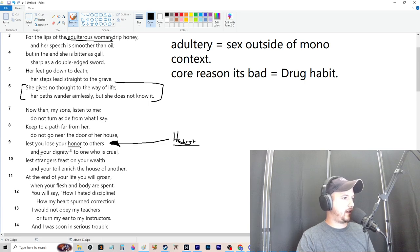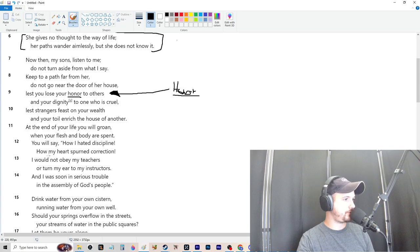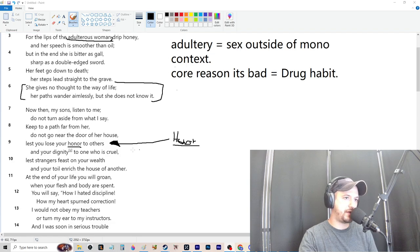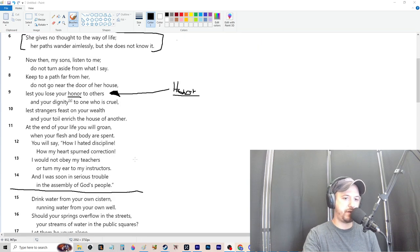And your dignity to one who is cruel, lest strangers feast on your wealth and your toil enrich the house of another. At the end of your life, you will groan when your flesh and body are spent. You will say how I hated discipline, how my heart spurned correction. I would not obey my teachers or turn my ear to my instructors. And I was soon in serious trouble in the assembly of God's people. Okay. So, I mean, so how does this tie to wealth? I mean, what I'm trying to say here, what, the reason why this all ties to wealth, I just want to comment on again before we get too far. I know I've kind of veered off quite quickly.